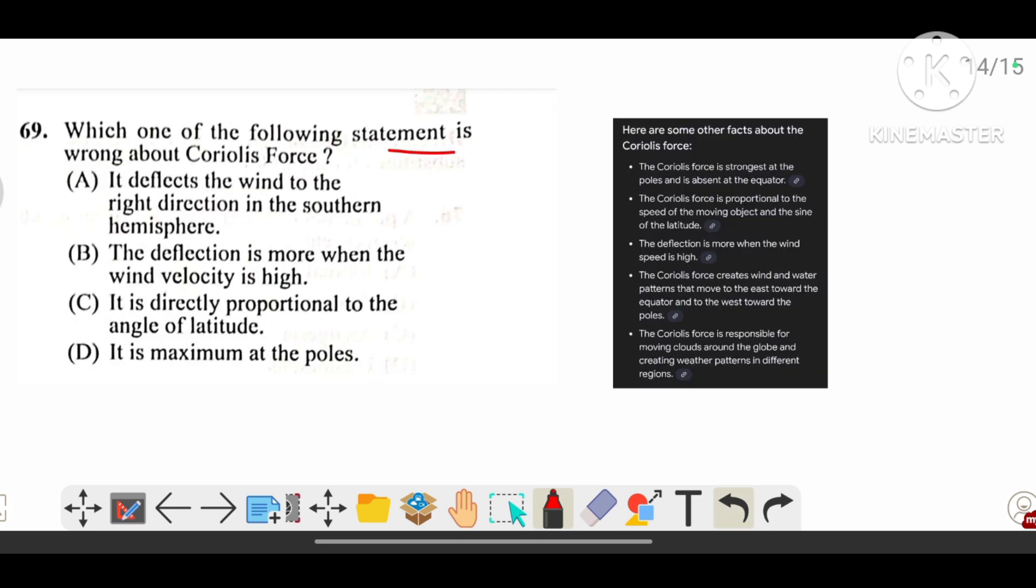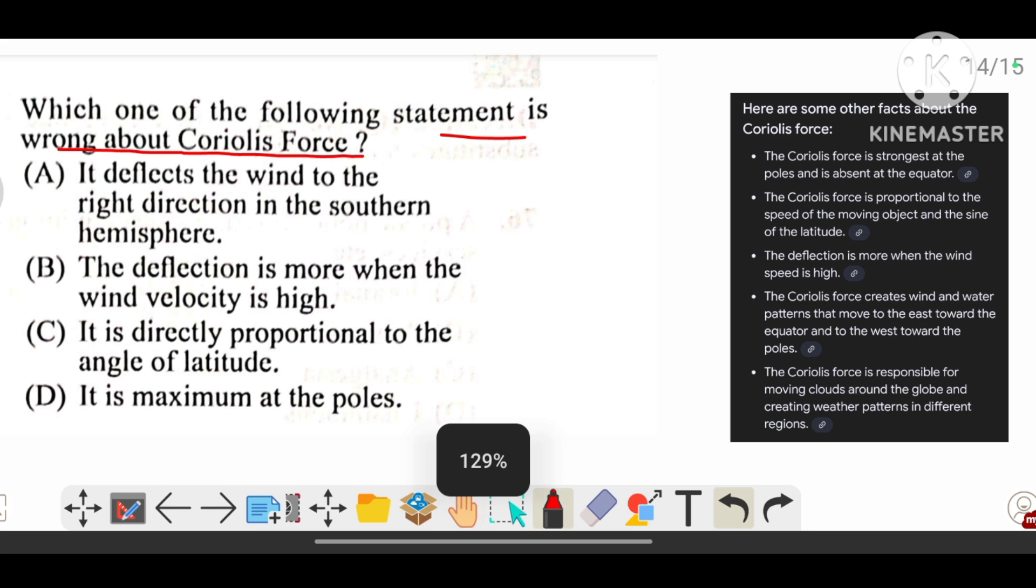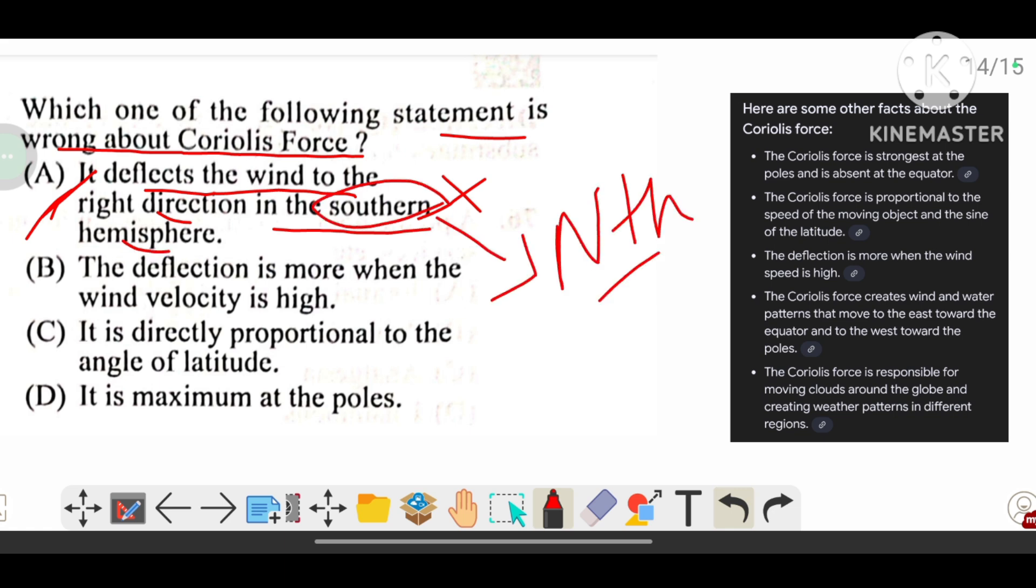Which one of the following statement is wrong about the Coriolis force? Read the statement carefully. The correct answer is A because this statement is incorrect. It deflects the wind to the right direction in the southern hemisphere, but it should be in the northern hemisphere. The other statements are correct, so this is the answer.